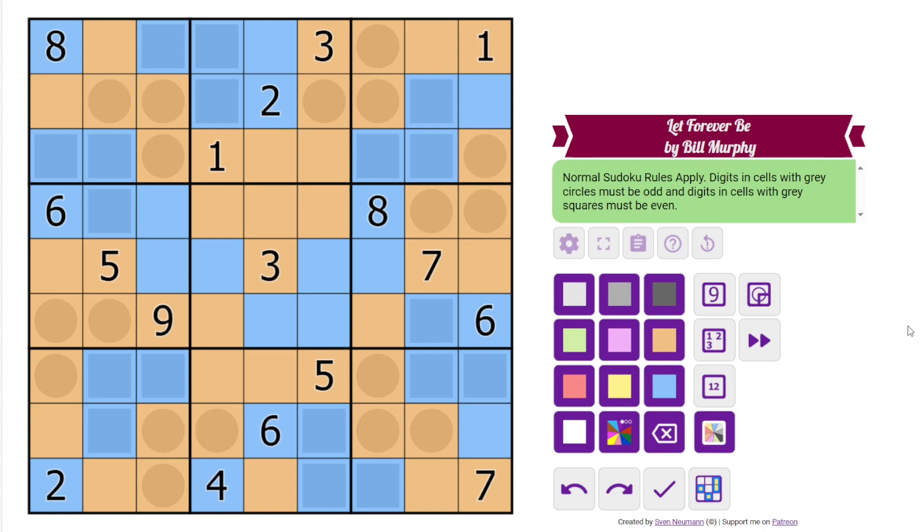And at this point, this is basically 2 separate puzzles. The even and odd digits are not going to interact anymore. They've done their interacting. And so we can consider each of them separate. So let's start with the even digits.